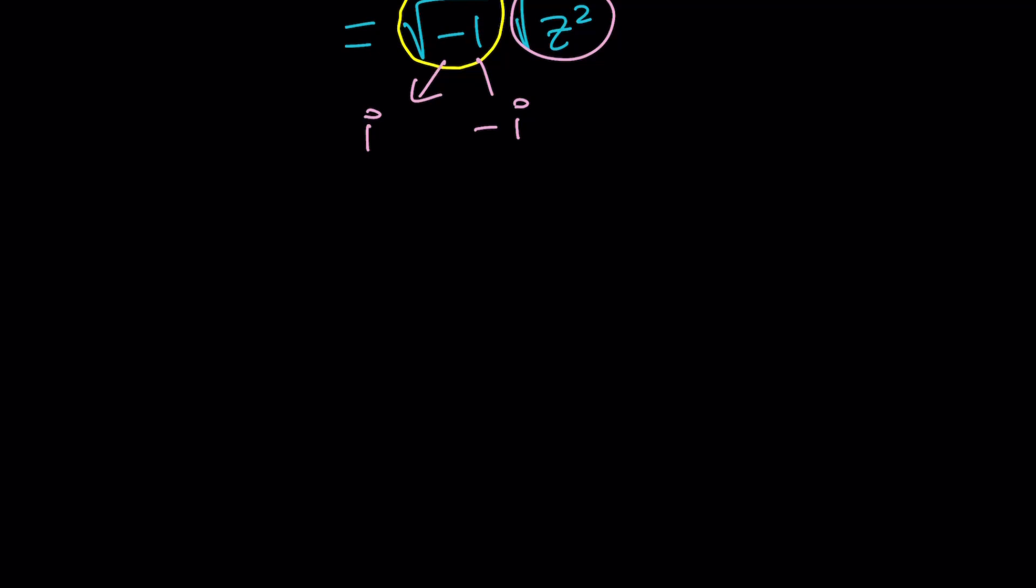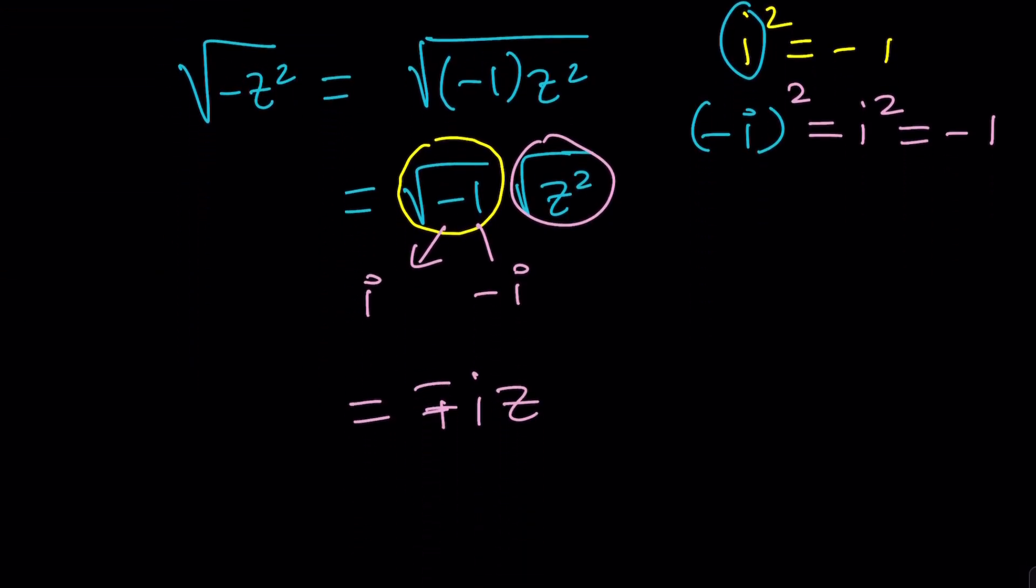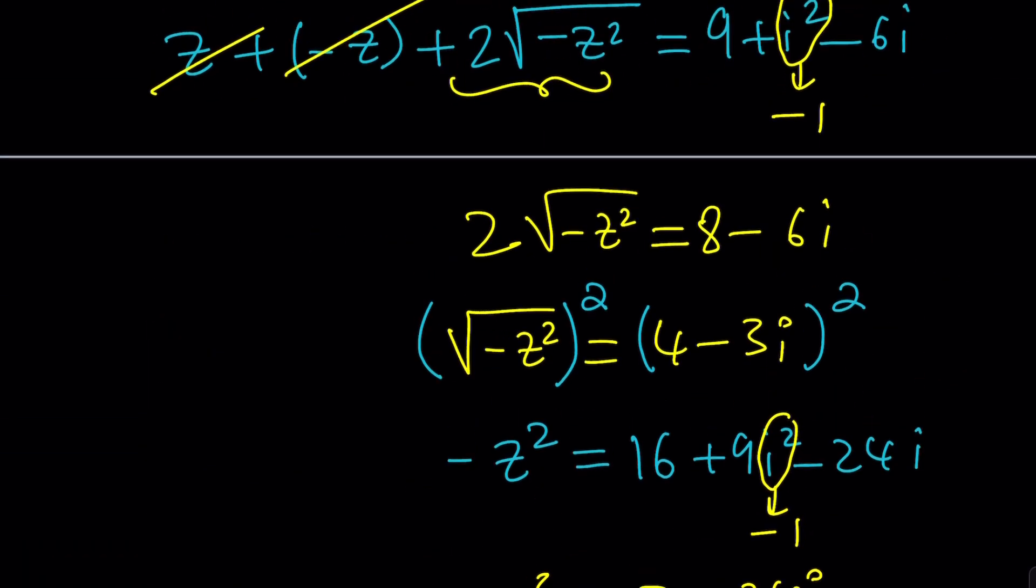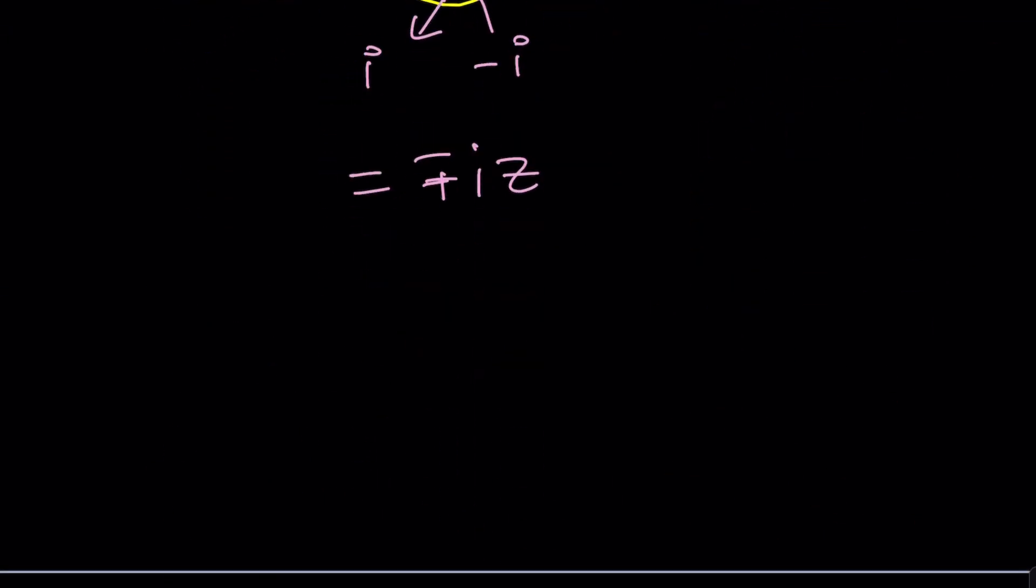We could express that as plus minus i. And of course, just take this as z. So from here, we get plus minus i z is equal to the right-hand side. Where does that come from? If you look at the original problem, 8 minus 6i divided by 2 gave us 4 minus 3i. So this is equal to 4 minus 3i.